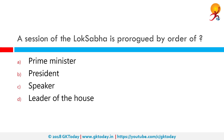A session of the Lok Sabha is prorogued by order of the President. Prorogation is the end of a session — it puts an end to a session. The time between a prorogation and reassembly is called recess. Prorogation is not the dissolution of the house, but it is a break taken by the house and it is done by the President. Dissolution of Lok Sabha is also done by the President.